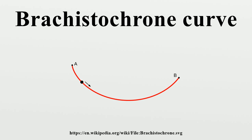Johann Bernoulli posed the problem of the Brachistochrone to the readers of Acta Eruditorum in June 1696. He published his solution in the journal in May of the following year, and noted that the solution is the same curve as Huygens' Tautochrone curve. After deriving the differential equation for the curve, he went on to show that it does yield a cycloid. However, his proof is marred by his use of a single constant instead of the three constants Vm, 2g, and d.